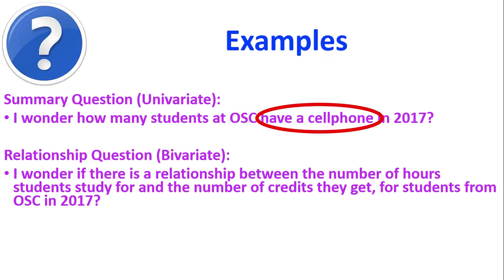Here's an example of a bivariate or relationship question. So first of all we usually see that word relationship in the question which is a giveaway. But let's look in detail at the variables. It's talking about is there a relationship between the number of hours students study for and the number of credits that they get. So that's giving us our two variables, the number of hours they study and the number of credits they get. So that makes it bivariate, two variables.